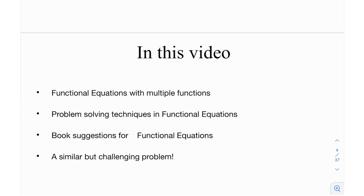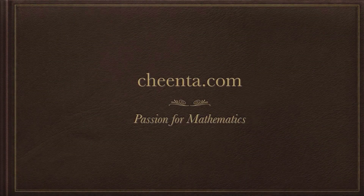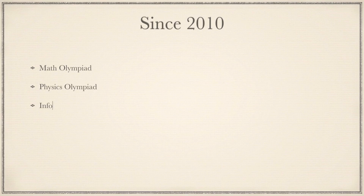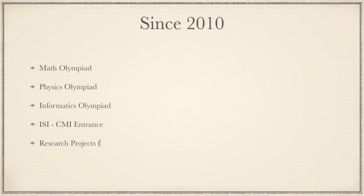The underlying objective is to form certain relations between the two functions, maybe try to write one function with respect to the other, and then reduce the given functional equation — which is in two functions — to maybe just one function. Then find one function, plug it into the equation relating the second function, and find both functions. This video is sponsored by Chinta.com. Since 2010, Chinta has trained thousands of students from all around the world in mathematical olympiads, physics olympiads, computer science and informatics olympiads, ISI-CMI entrances, and research projects for school and college students.